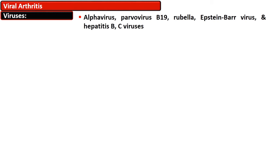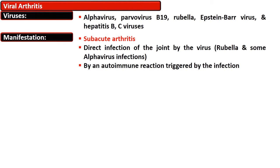Causative agents for viral arthritis include alpha viruses, parvovirus B19, rubella, Epstein-Barr virus, and hepatitis B and C viruses. The disease manifests as sub-acute arthritis. There is direct infection of the joint by the virus, as seen in rubella and some alpha virus infections, and it can also occur through an autoimmune reaction triggered by the infection.